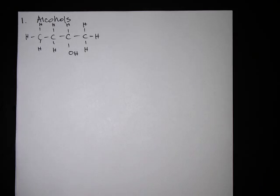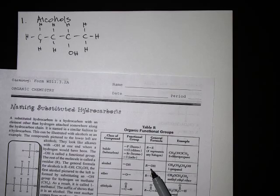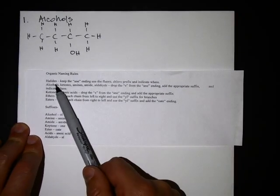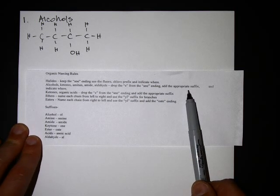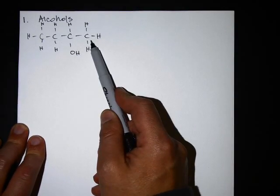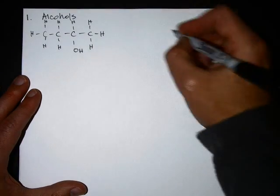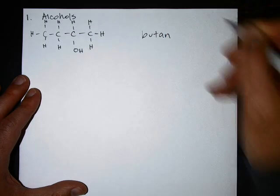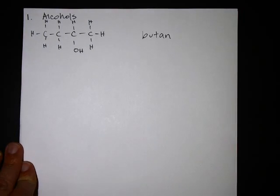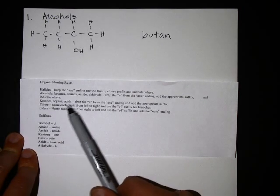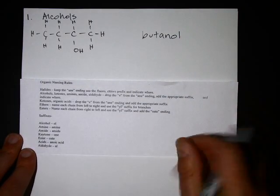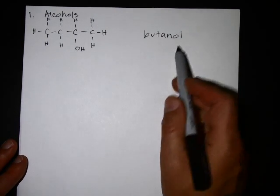Does the OH need to be at the end like the picture shows? No, it does not need to be at the end — it can be anywhere. As long as there's an OH, it's an alcohol. There are certain rules for alcohols on this sheet: drop the E from the -ane ending and add the appropriate suffix. The alcohol suffix is -ol. Start with naming the chain like we always do — how many carbons? Four. So four carbons is butane, but drop that E.